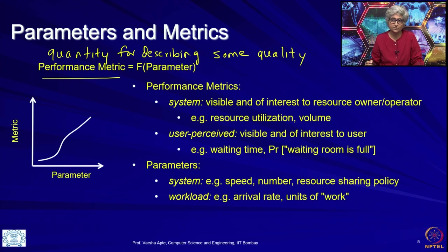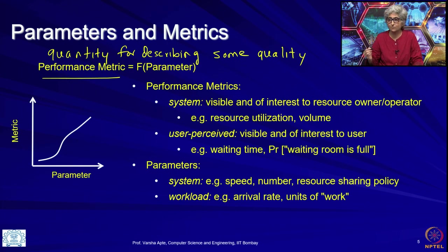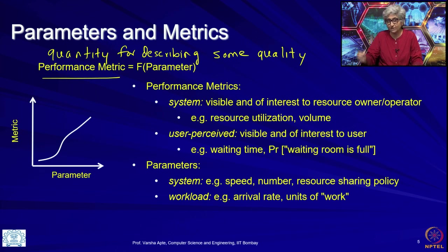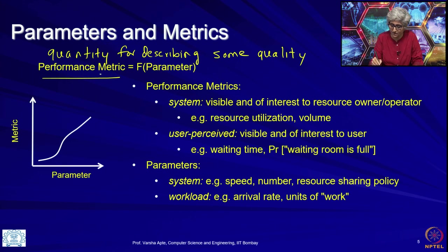For example, you might say that this person is very fast — that is just a qualitative attribute. The metric would be: this person runs 1 kilometer in 5 minutes or 3 minutes. Or if you say this person is very strong, the metric would be how many kilograms can they lift — 50 kg, 100 kg. So it is a quantitative measure for describing some quality, and that is a metric.